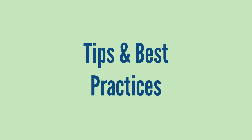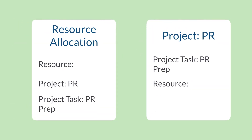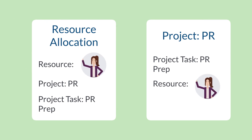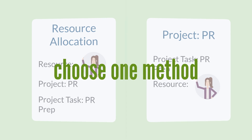There are some tips and best practices to be aware of. You can assign a resource to a project task either directly on the resource allocation record or from the project record, but you should try to avoid doing both methods. This will keep you from running into conflicts with your resource scheduling.